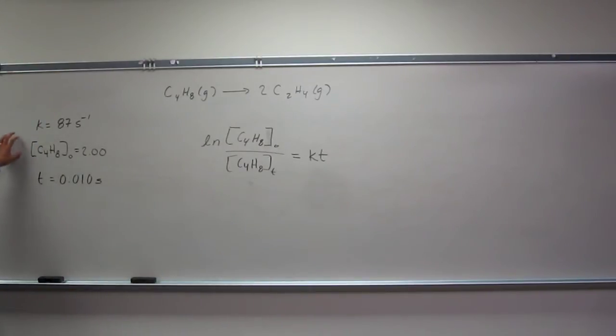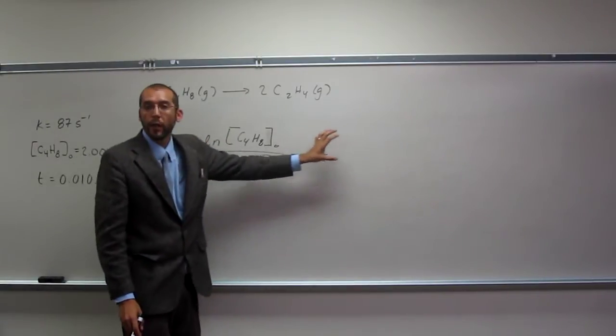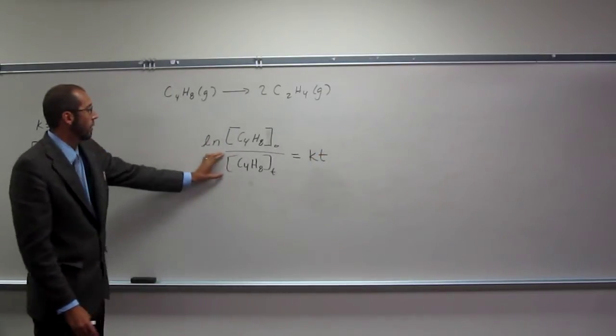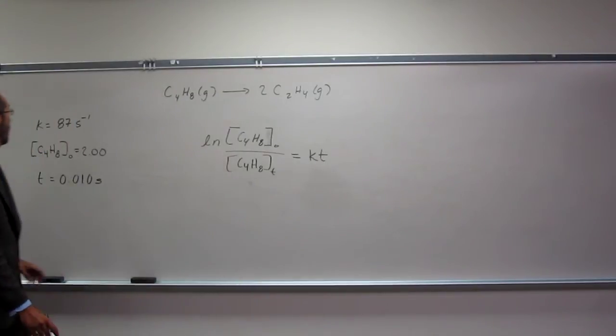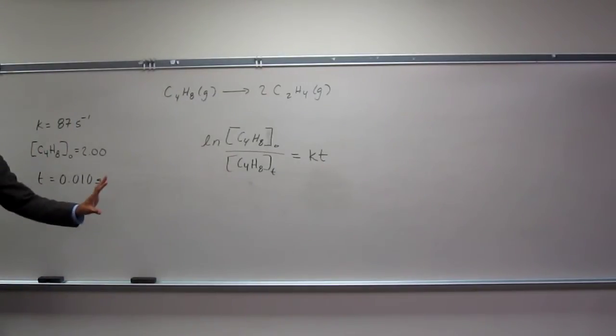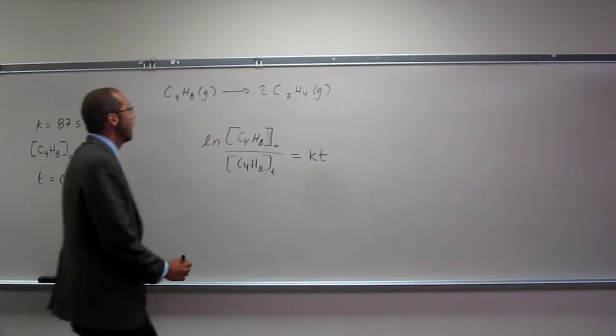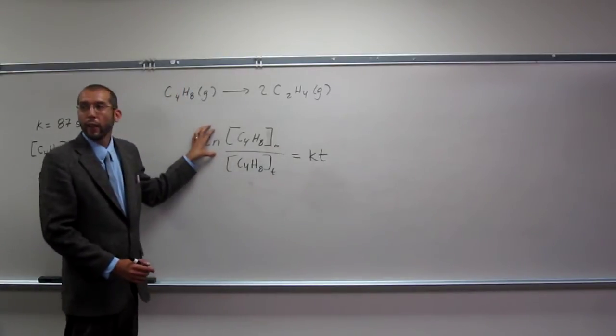So, we have concentration original, we have K, we have T, so we're trying to find what is this concentration at that time. Does everybody understand what we're looking for? So, how do we get rid of ln, you guys remember?